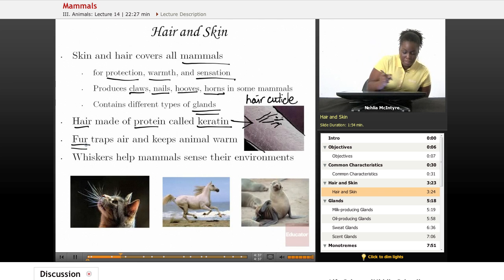Now, many mammals have fur, which is a very thick coating of hair. And the fur is used to trap air and to keep the animal very warm.